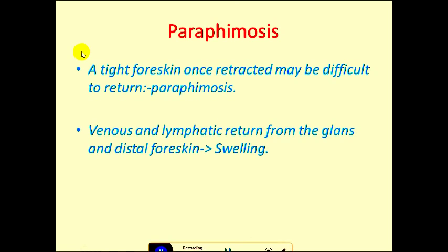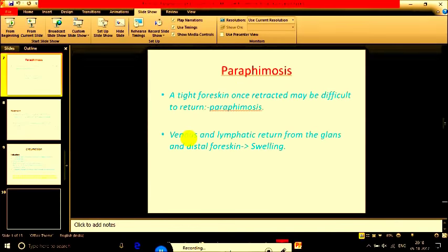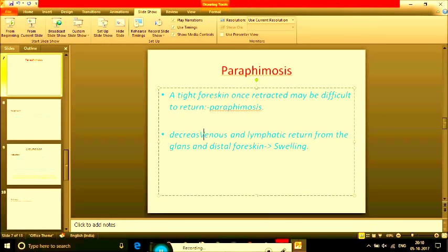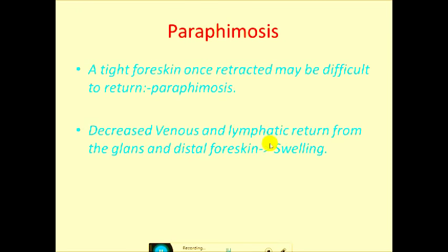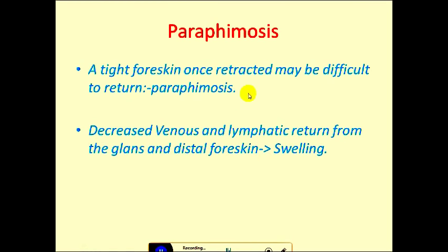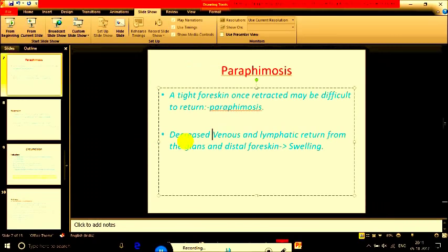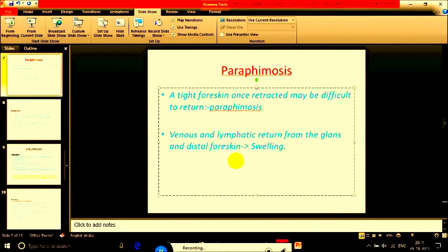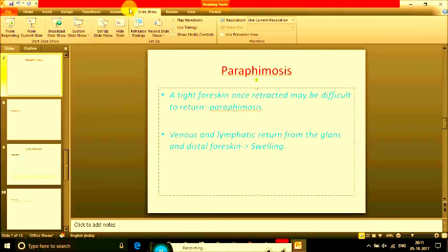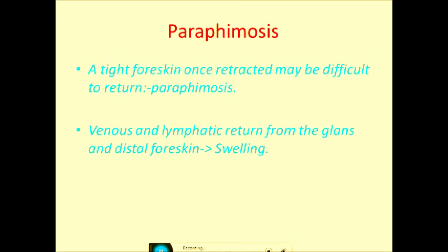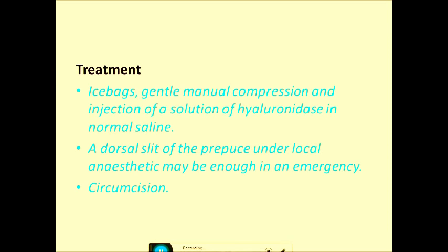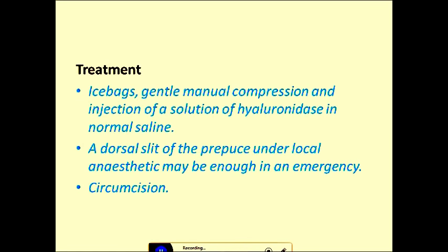Paraphimosis leads to decreased venous and lymphatic return from the glans and distal foreskin, which causes swelling. For treatment, ice packs can be applied to reduce the edema. Glycerine can also be applied, along with gentle manual compression. Injection of a solution of hyaluronidase in normal saline can also relieve the condition.